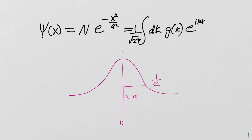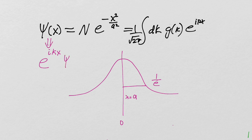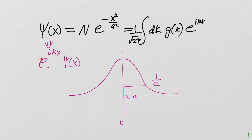To understand this, we look at what happens when we multiply our wave function by e^{ik₀x}: ψ → e^{ik₀x} ψ(x). The first thing we notice is that the modulus squared is unchanged — this doesn't affect the probabilities, because the complex conjugate terms cancel. But what does this do to the overall momentum?